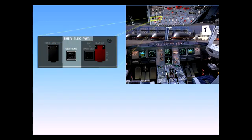The indications for avionic smoke are located on two panels in the cockpit: the emergency electric power panel and the ventilation panel.